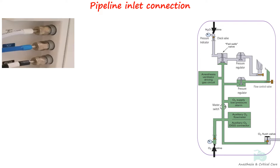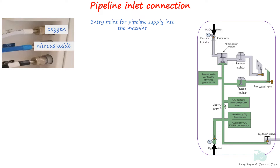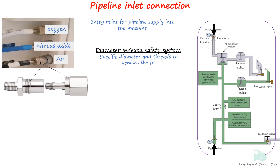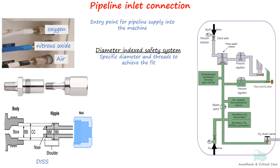The pipeline inlet connection is the entry point for gases from the pipeline supply. The anesthesia workstation standard requires pipeline inlet connections for oxygen and nitrous oxide. Most machines also have an inlet connection for air. These connections are fitted with threaded non-interchangeable connections called the Diameter Index Safety System, which consists of a body, nipple, and nut combination.